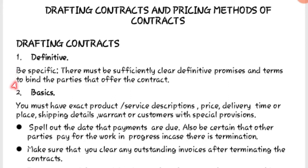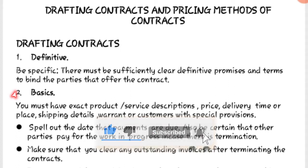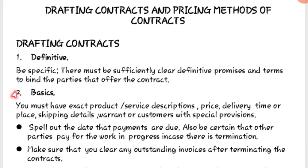The next thing under contract drafting is the basics, which is like the body of the contract. You must have the exact product or service descriptions, the price, the delivery time or place, the shipping details, warranty, and any special provisions. You should know what you want, which product you want, and you should have done a market research to know its price.